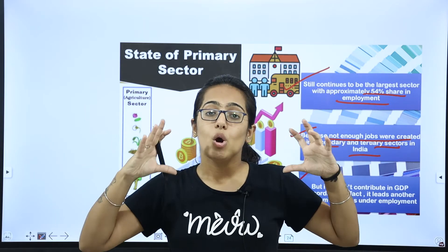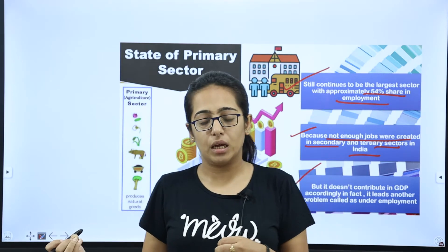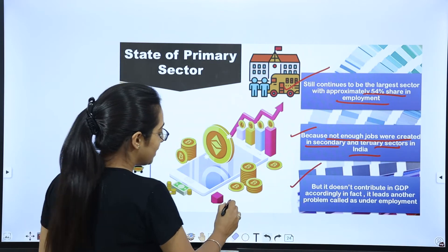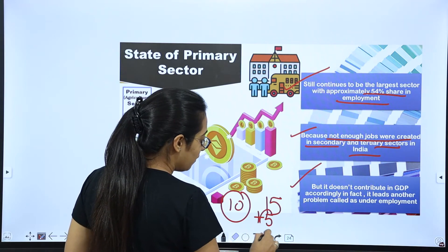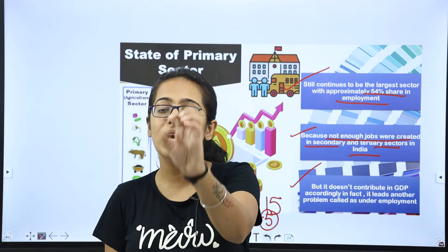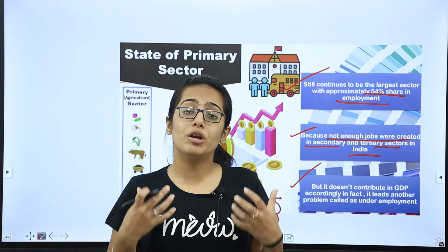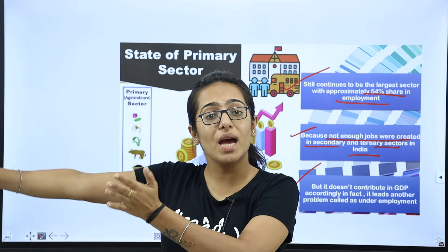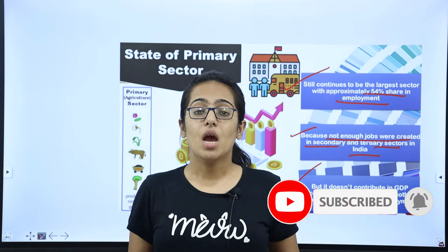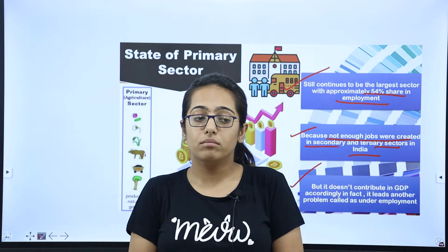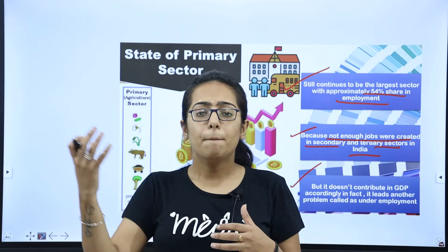Suppose there is a field where only 10 persons are needed, but there are 15 persons working. There are 5 extra persons. If you remove those 5 workers, the output would not reduce — the remaining 10 can handle the work. The extra 5 persons contribute in the field with cropping and labor, but they don't add to productivity.